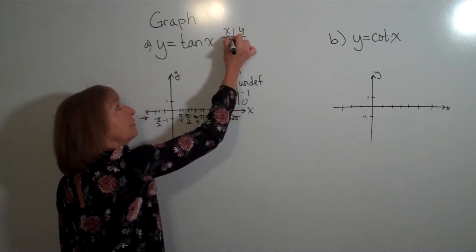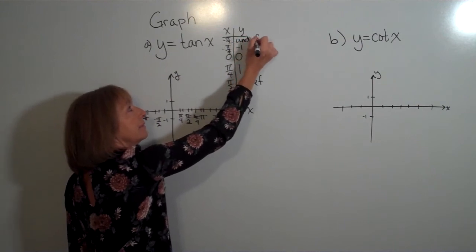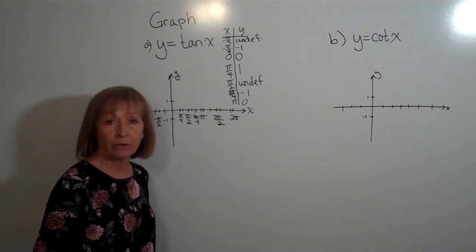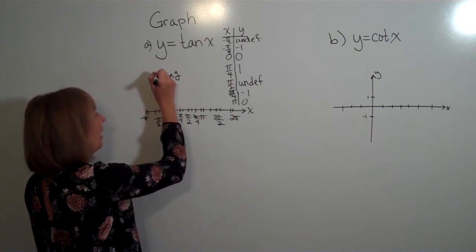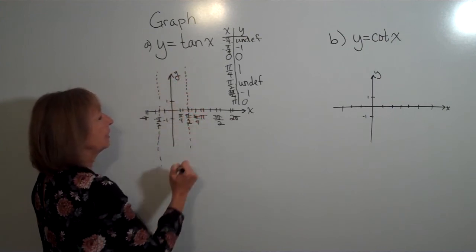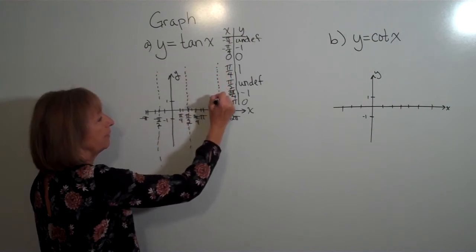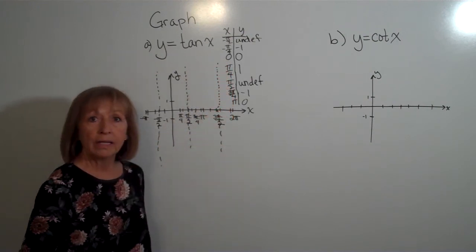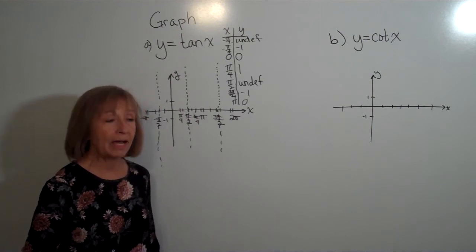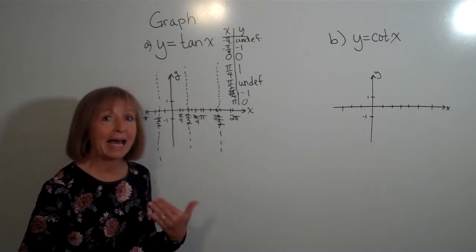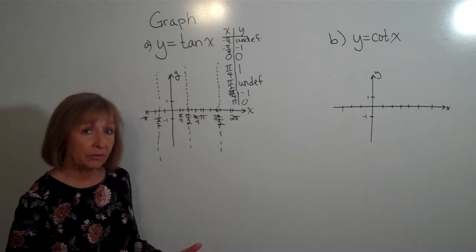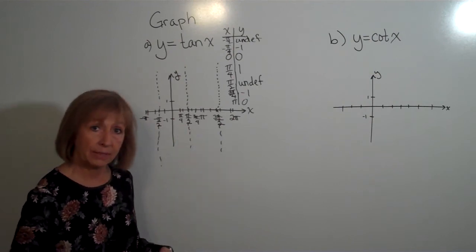At negative pi over 2, the tangent is undefined. At these undefined values, we get vertical asymptotes because the denominator is 0 but the numerator is not. So there is a vertical asymptote at negative pi over 2, at pi over 2, and at 3 pi over 2. The tangent function's domain is all reals except at odd multiples of pi over 2 — there are infinitely many places where it's undefined, unlike sine and cosine.